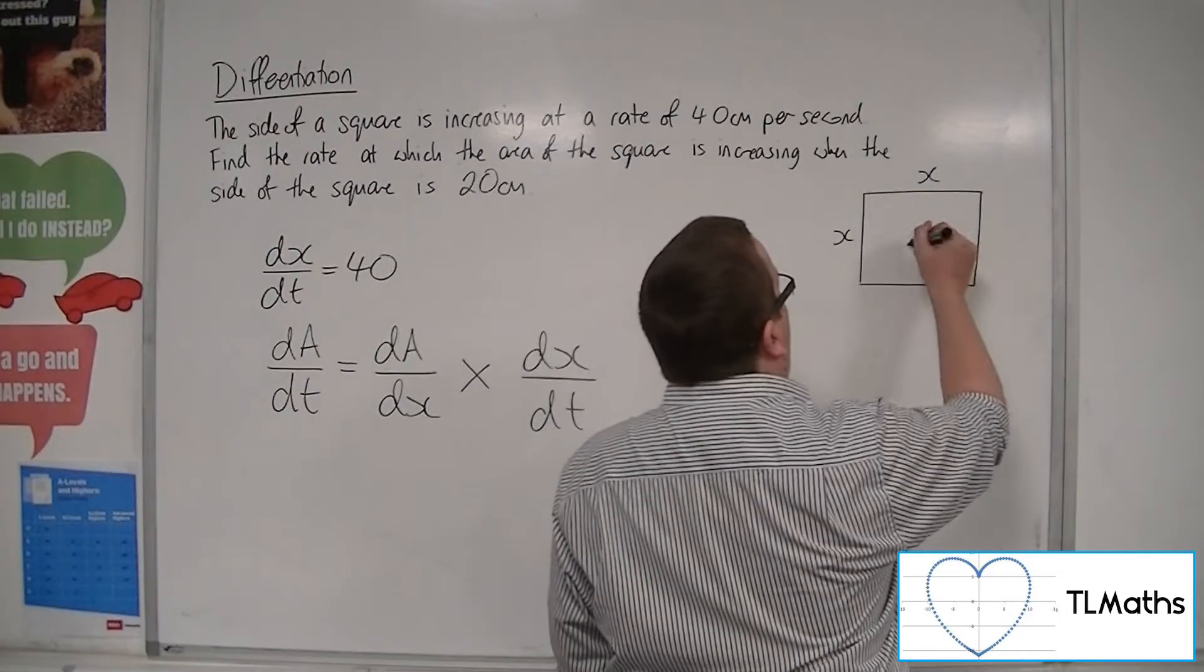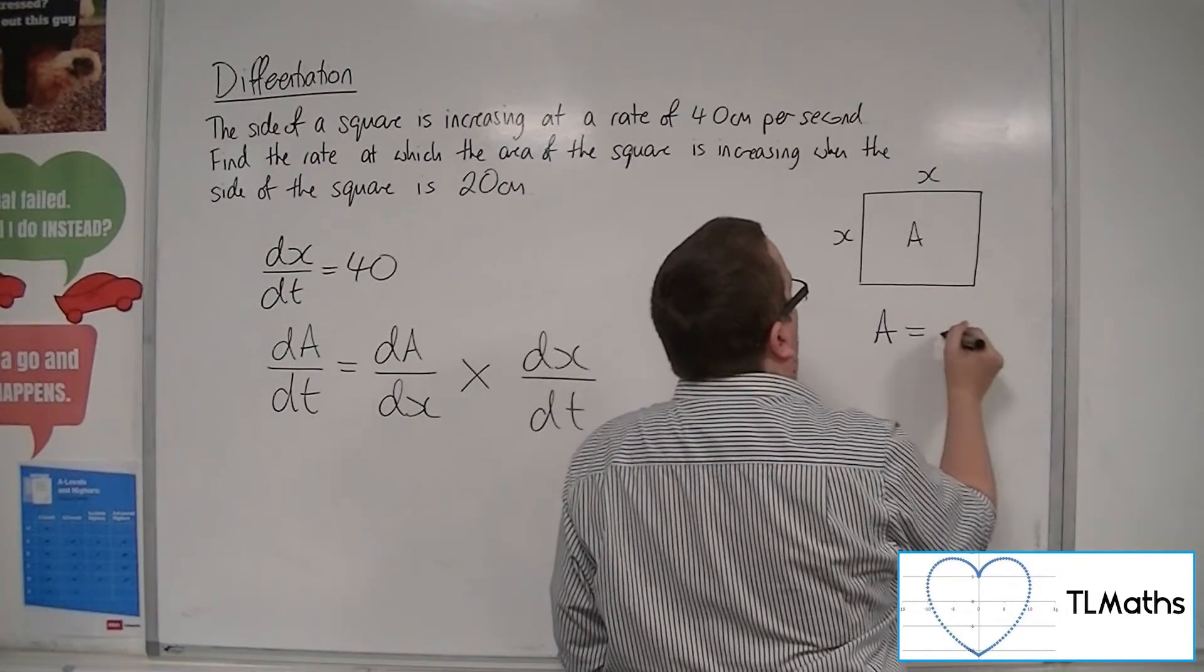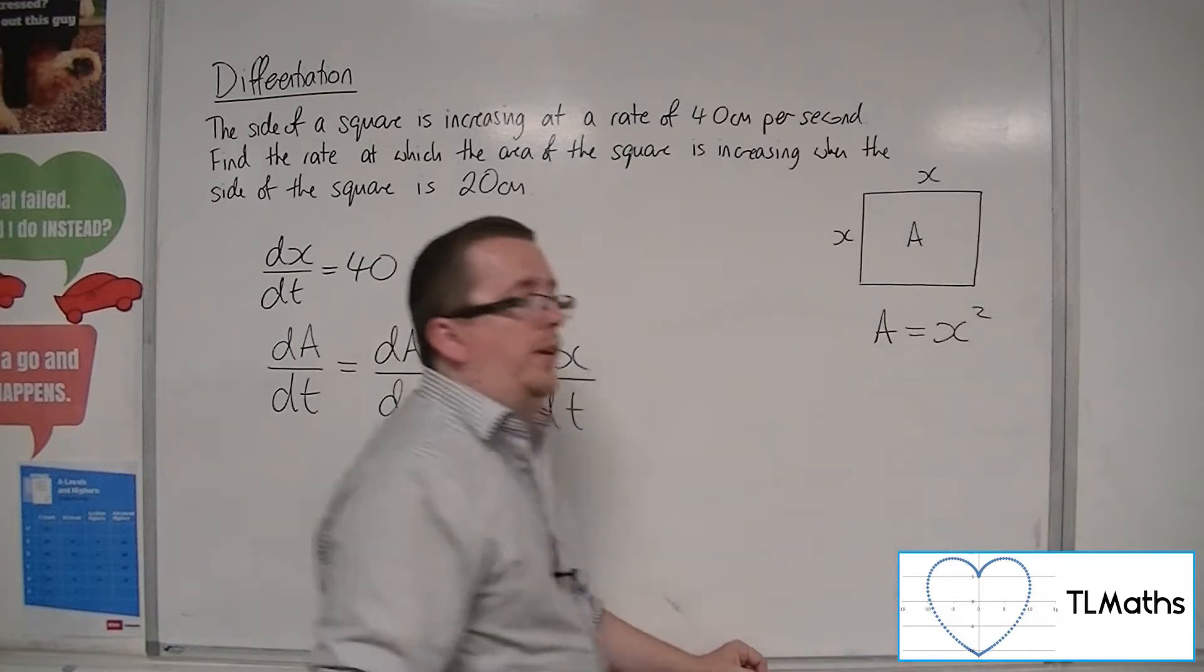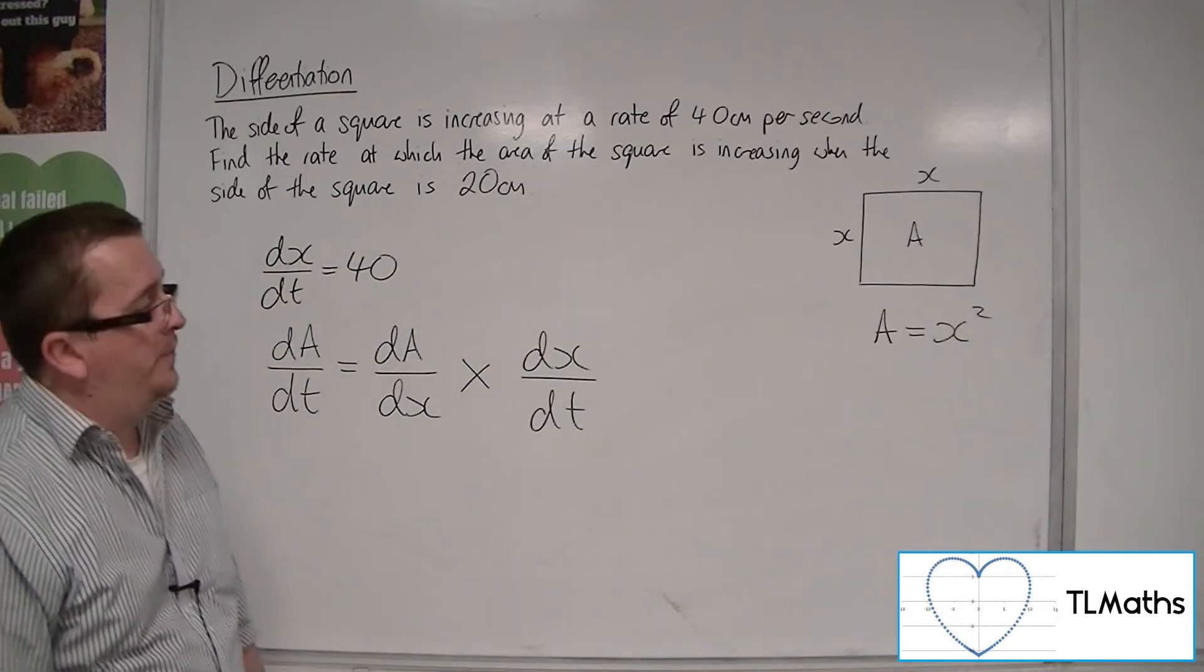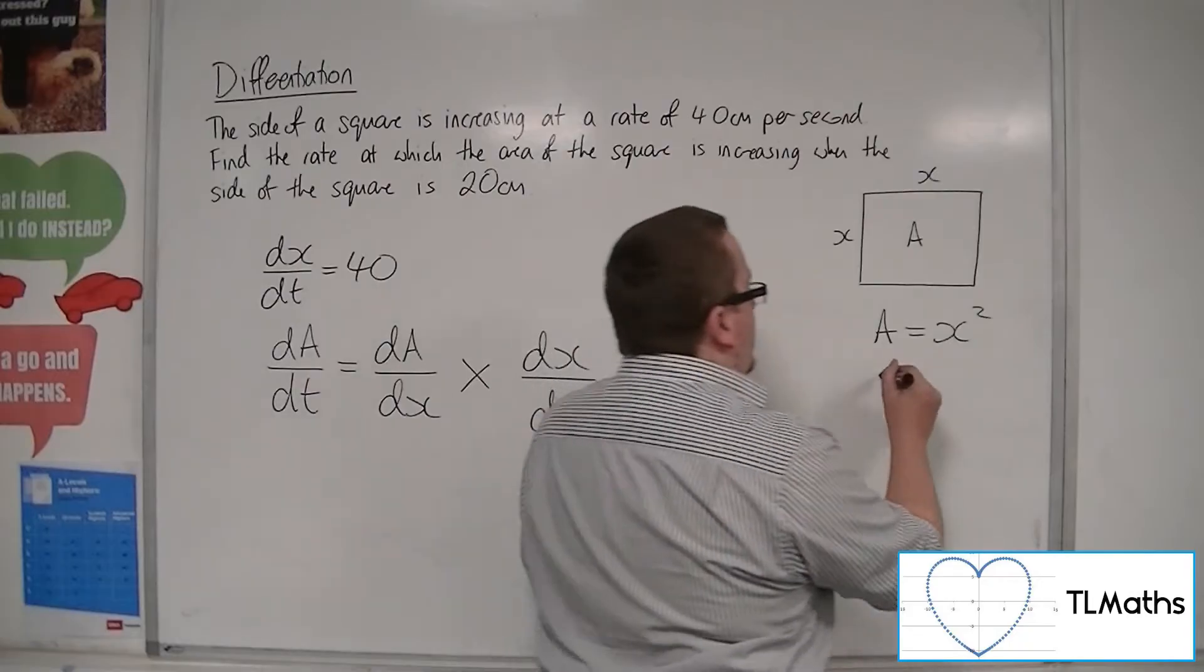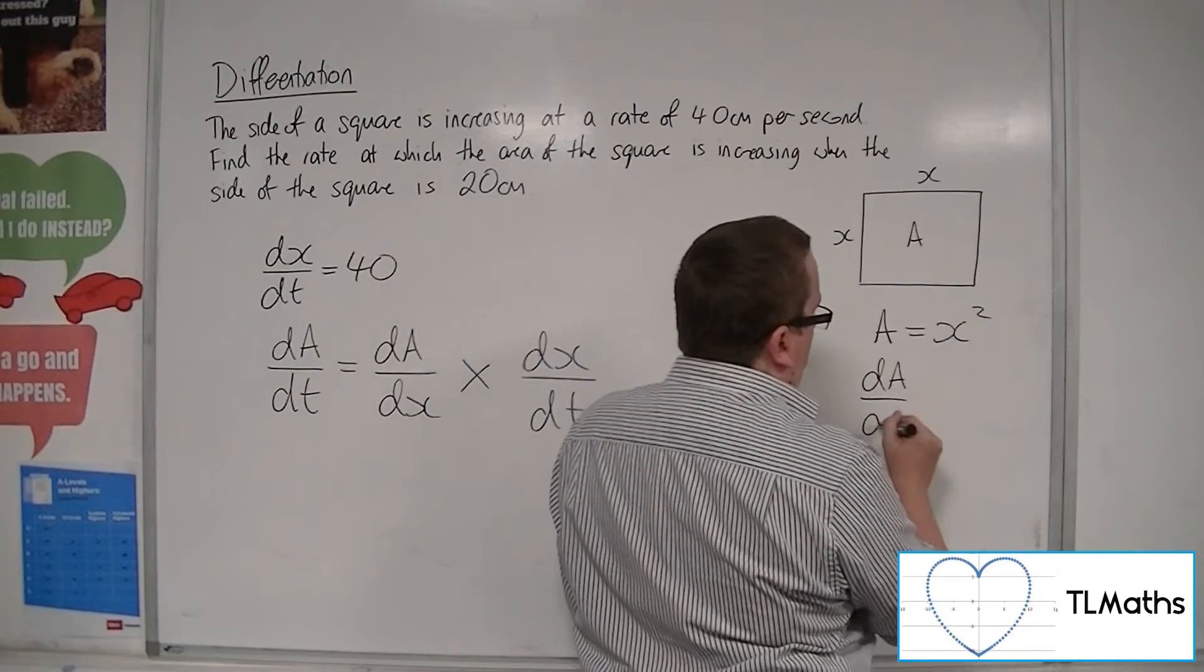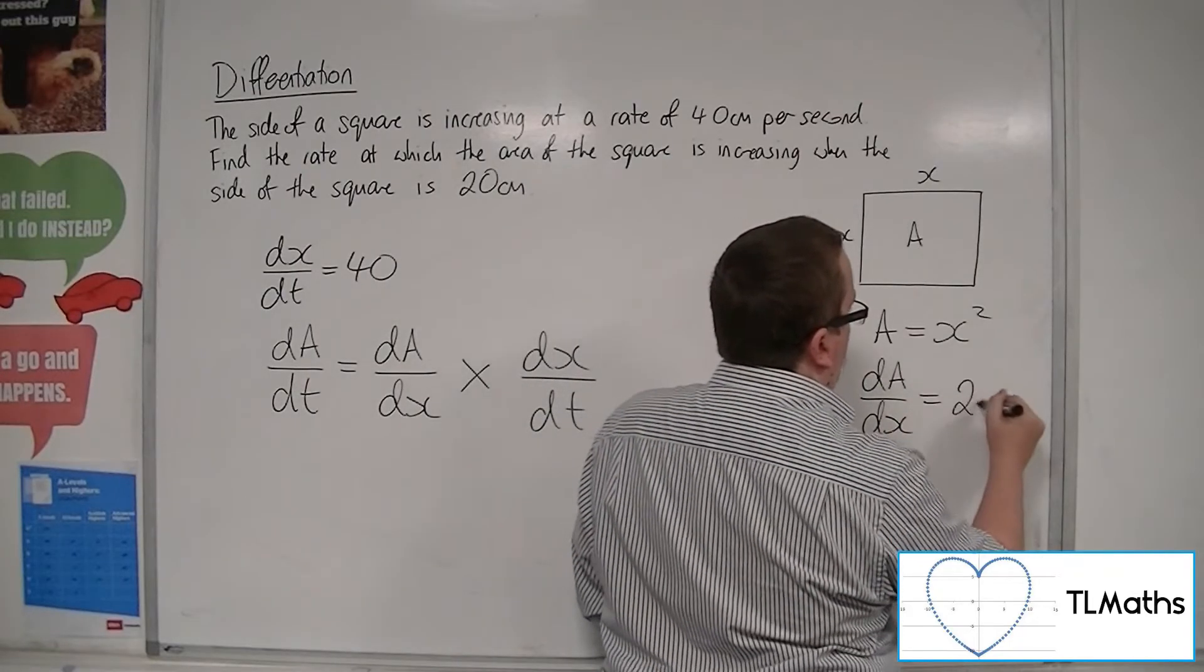Okay, so I'm looking at the area of the square, and the area of a square is given by A equals x squared, in this case. So I can work out dA/dx. That will be 2x.